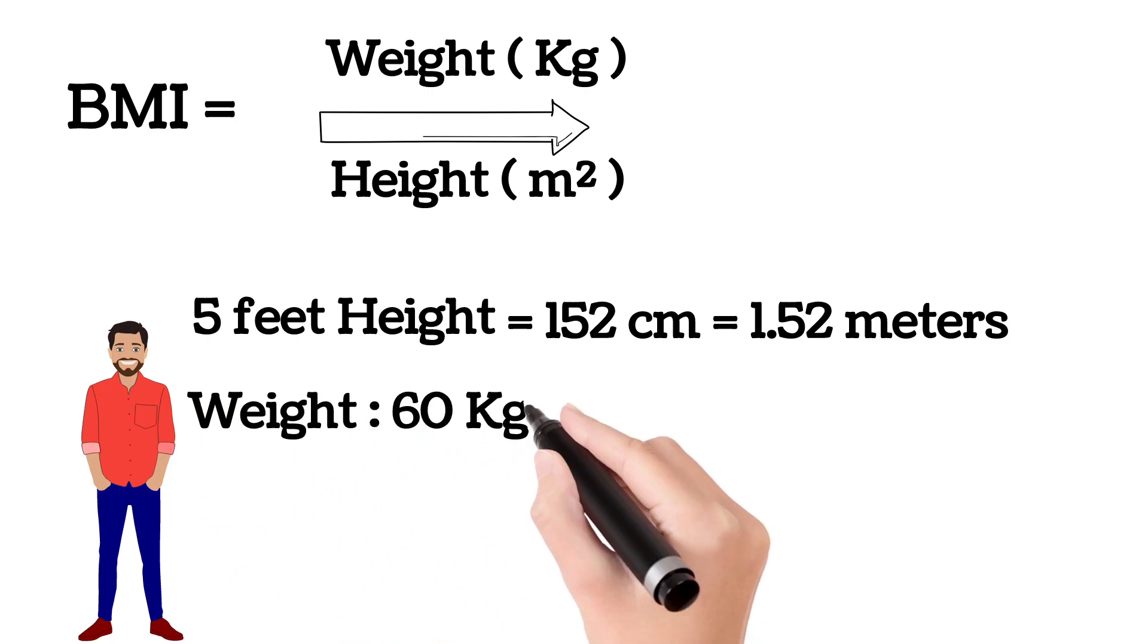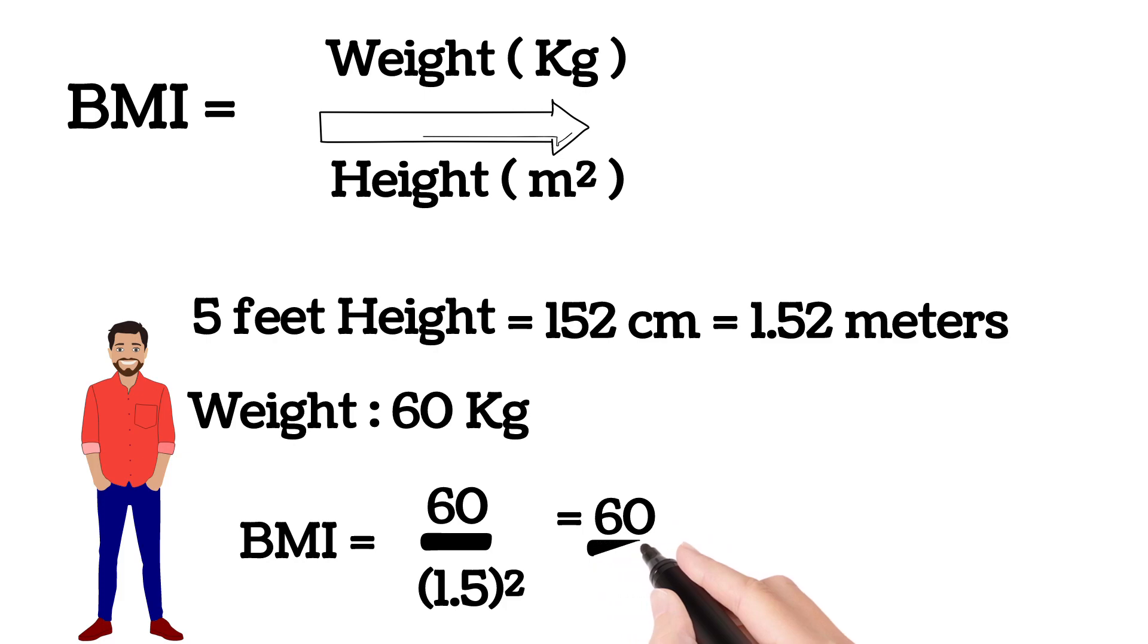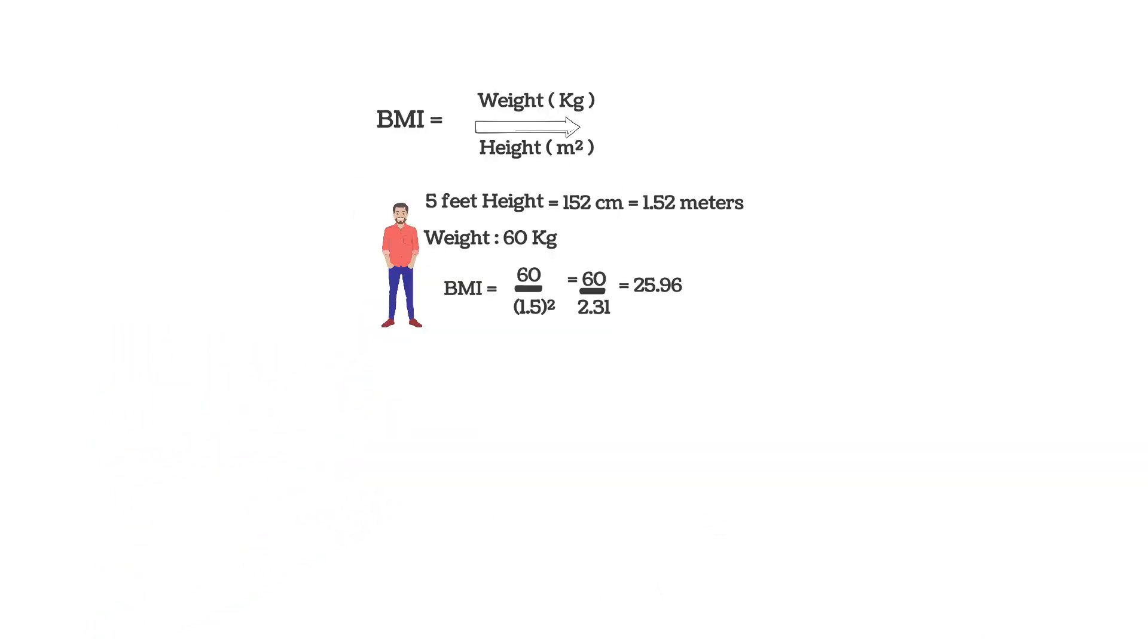So, here we can calculate the BMI. Weight divided by height in meter square. So, 60 by 1.5 whole square is equal to 60 divided by 2.31, approximately 25.96. That is, the BMI is 25.96.